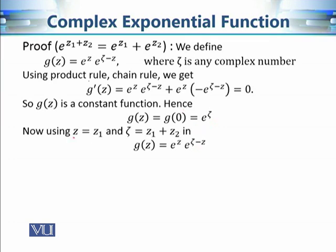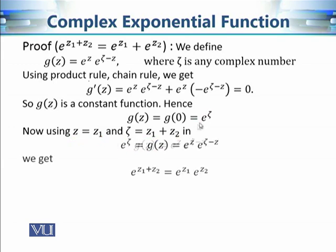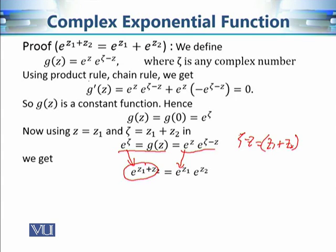Now set z = z1 and ζ = z1 + z2. Then g(z1) = e^(z1+z2), but also g(z1) = e^z1 · e^(ζ−z1) = e^z1 · e^(z1+z2−z1) = e^z1 · e^z2. Therefore e^(z1+z2) = e^z1 · e^z2, completing the proof of the second property.